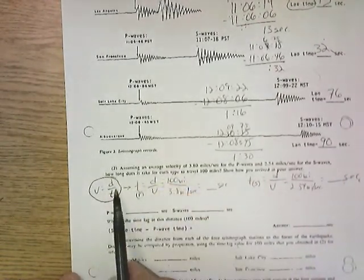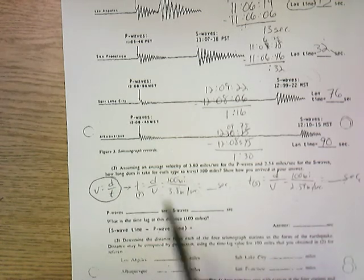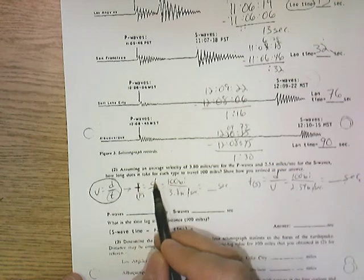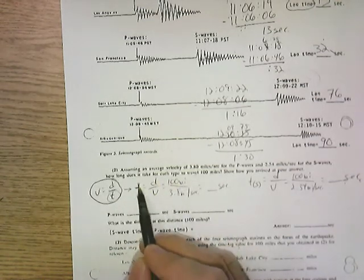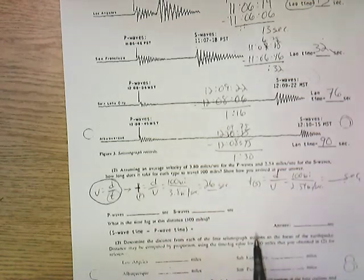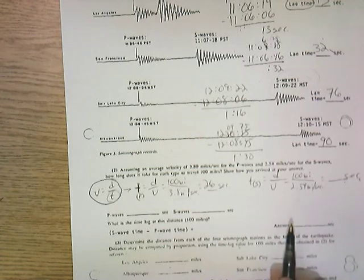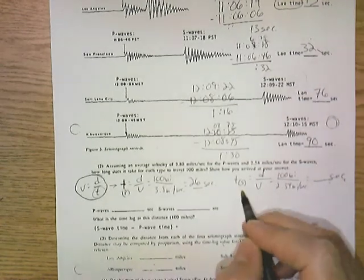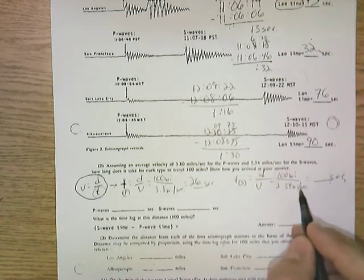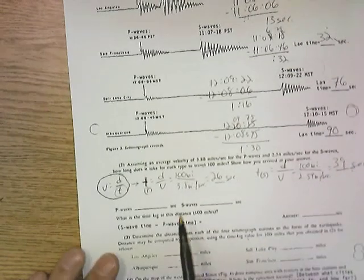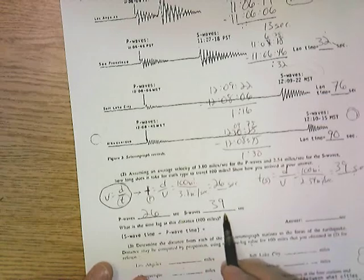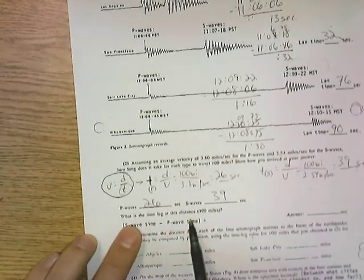I have a calculation using velocity equals distance divided by time. We're trying to figure out how long it takes to travel 100 miles, so I'm solving for t. So t equals the distance traveled, which is 100 miles, divided by the velocity of that particular wave. The time for the P wave to travel 100 miles traveling at a rate of 3.8 miles per second is going to be 26 seconds, calculated by 100 divided by 3.8. And my time for the S wave to travel 100 miles, 100 divided by 2.54, is 39 seconds. So it takes 26 seconds for the P wave to travel 100 miles and 39 seconds for the S wave to travel 100 miles.